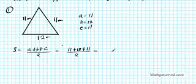11 plus 12 plus 11 is 34. If you divide that by 2, you have 17, so there goes your semi-perimeter.